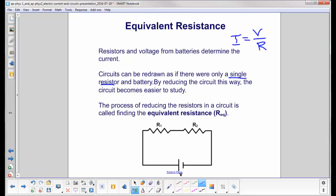The process of reducing the resistors in a circuit to one resistor is called finding the equivalent resistance. Let's look at Ohm's law here. We want to find the current coming out of the battery. There's only one voltage that's given by the battery, but there's two resistors, so what do we do?